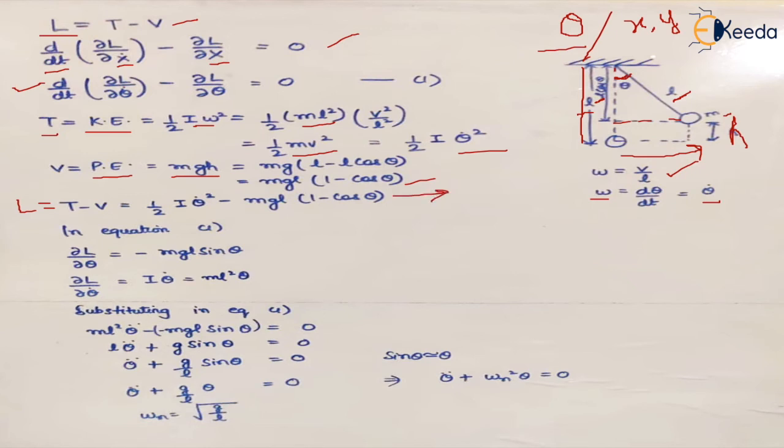Now if we differentiate this L with respect to theta, there is only one component of theta which is this component. Cos theta becomes minus sin theta and because this negative becomes positive, the equation that we get is mgl sin theta.